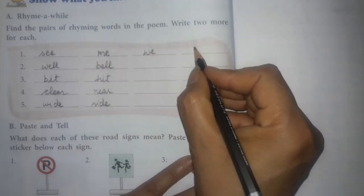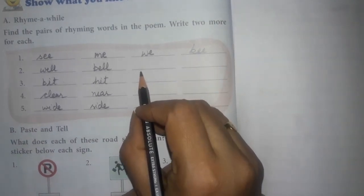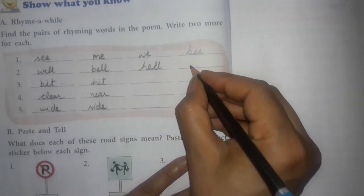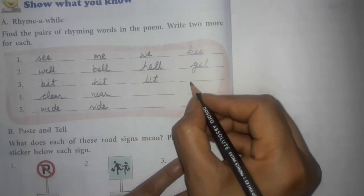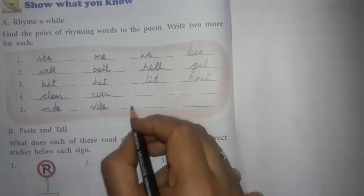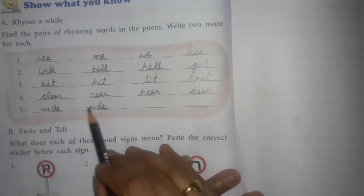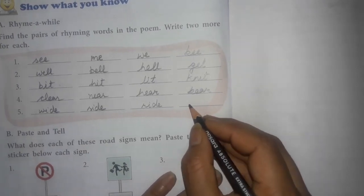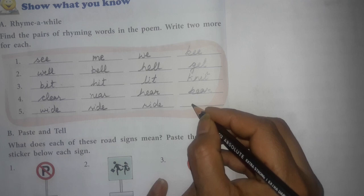Now we have to write two more words. See me we be. Will bell hell gel. Bit hit lit knit. Clear near hear beer. Wide side ride tight. So these are the words which you have to write in your book.